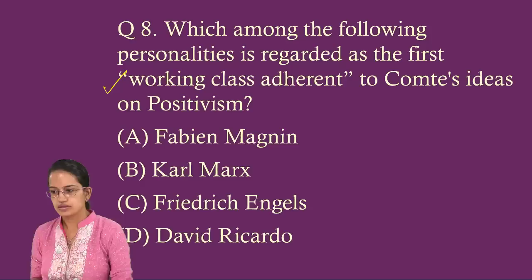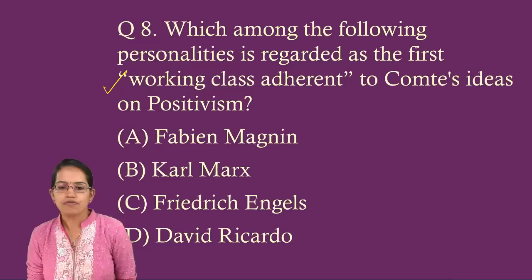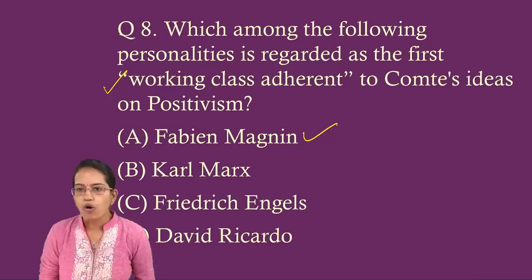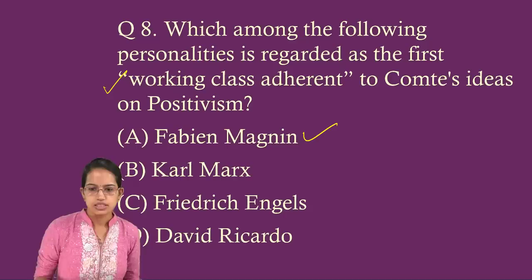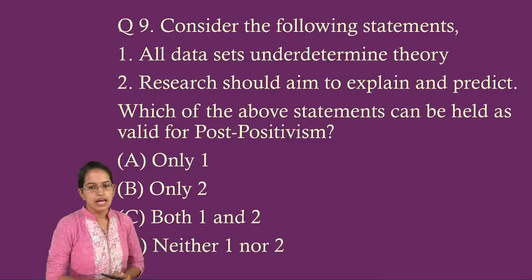The answer is Fabian Magnan. He was appointed as successor after Comte for the presidency of the Positive Society after Comte's death, and he was considered the first working-class adherent to Comte's philosophy and ideas.